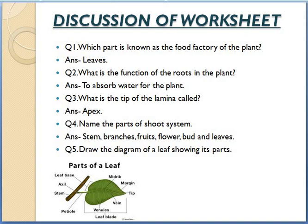Question 3: What is the tip of the lamina called? Answer is apex. Question 4: Name the parts of the shoot system. Answer is stem, branches, roots, flower, bud and leaves.